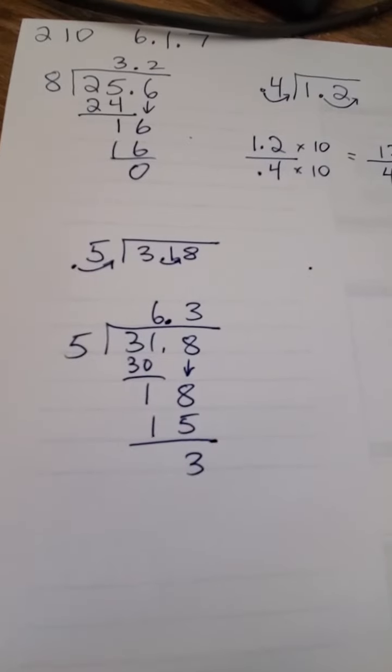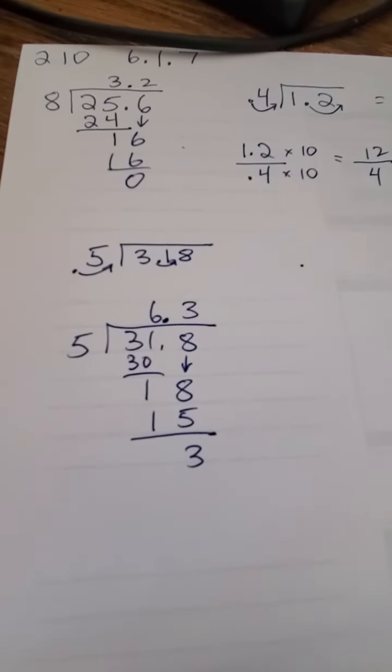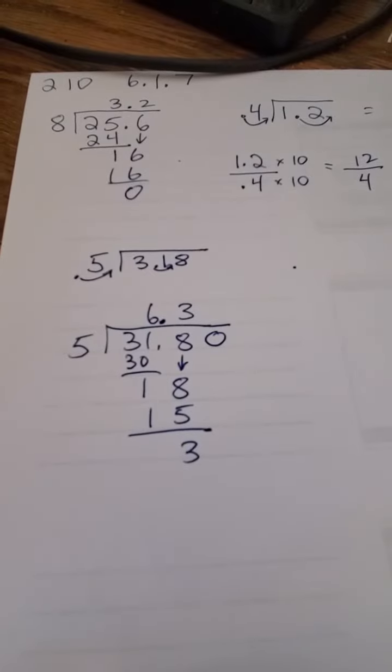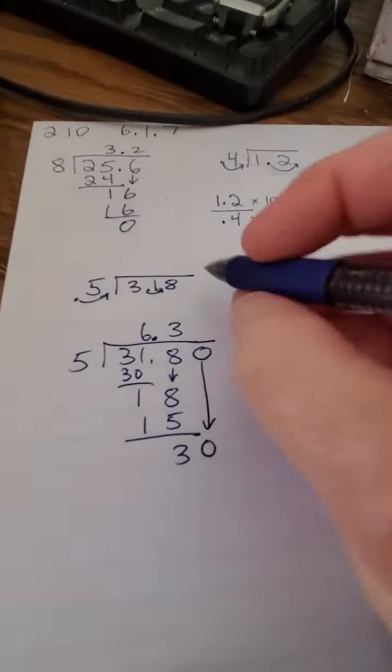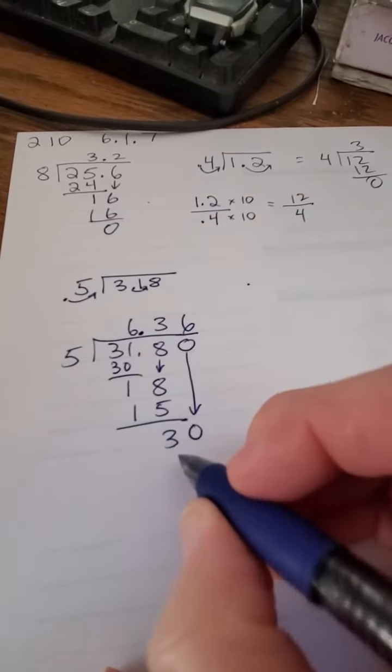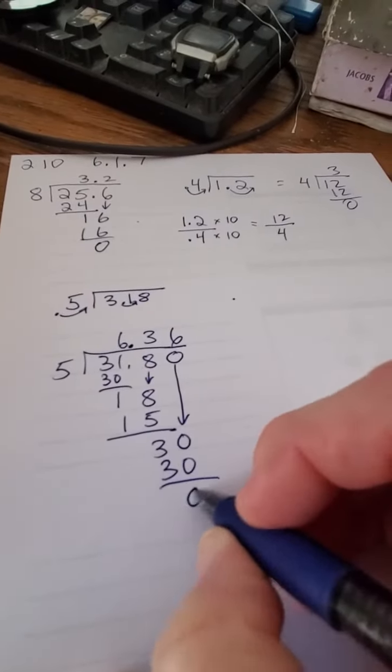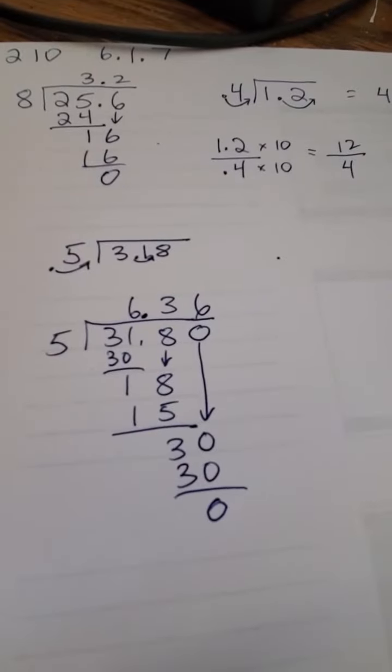Now, what do I do with a remainder of 3? So I have to add a 0 up on top of the box. So I just added a 0, and I have to bring that 0 down. And now I have a 30. How many times does 5 go into 30? It goes in six times. And we are done. That is my answer, 6.36.